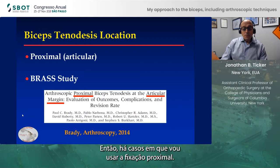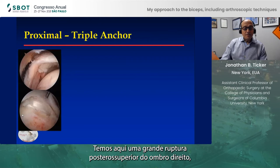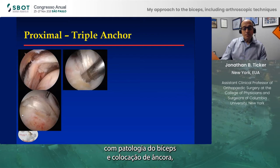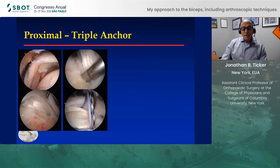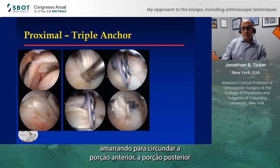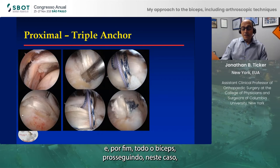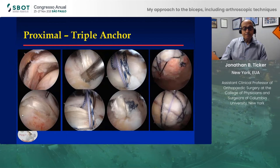There are times where I will place fixation proximally. This is a massive right posterior superior tear with biceps pathology. I'm placing the anchor just lateral to the articular margin at the biceps groove. I'll pass sutures around and through the biceps and tie them to encircle the anterior half, the posterior half, and then the entire biceps, and then proceed with a double row repair.